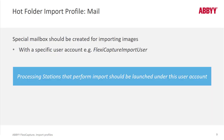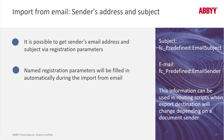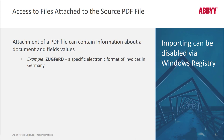You want to create a dedicated email address, and the processing stations that perform import should be launched under that user account. It is possible to retrieve the sender's email address and subject via FlexiCapture registration parameters — that's accessible information that you can work with. Perhaps you want to do some downstream scripting, post-FlexiCapture scripting where you can send a response and include the data that you captured.